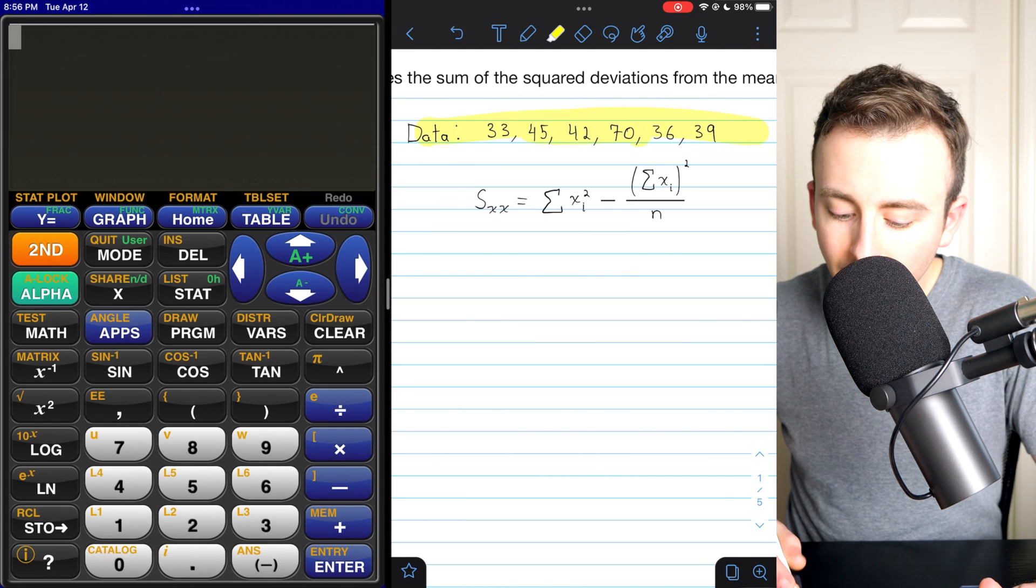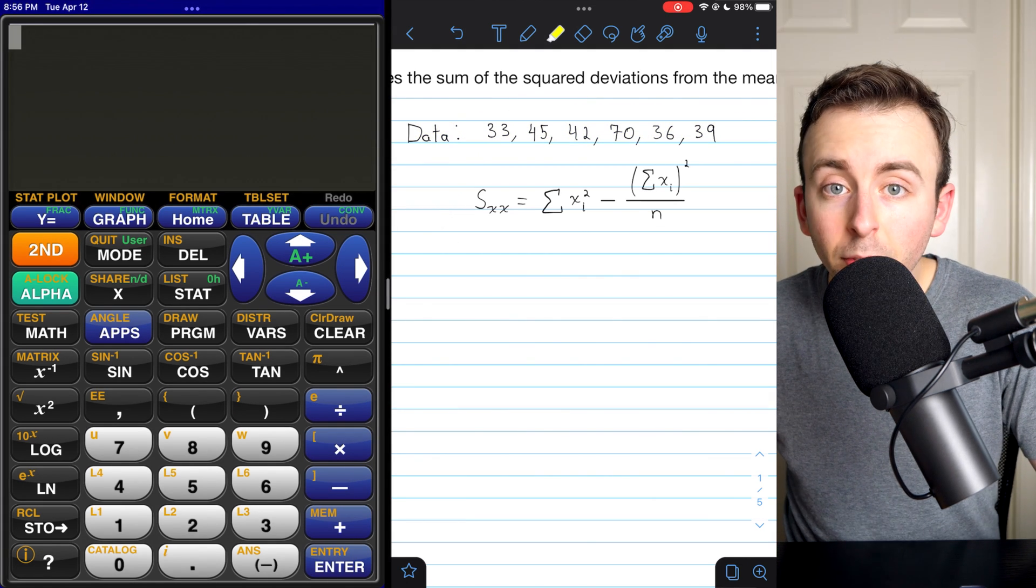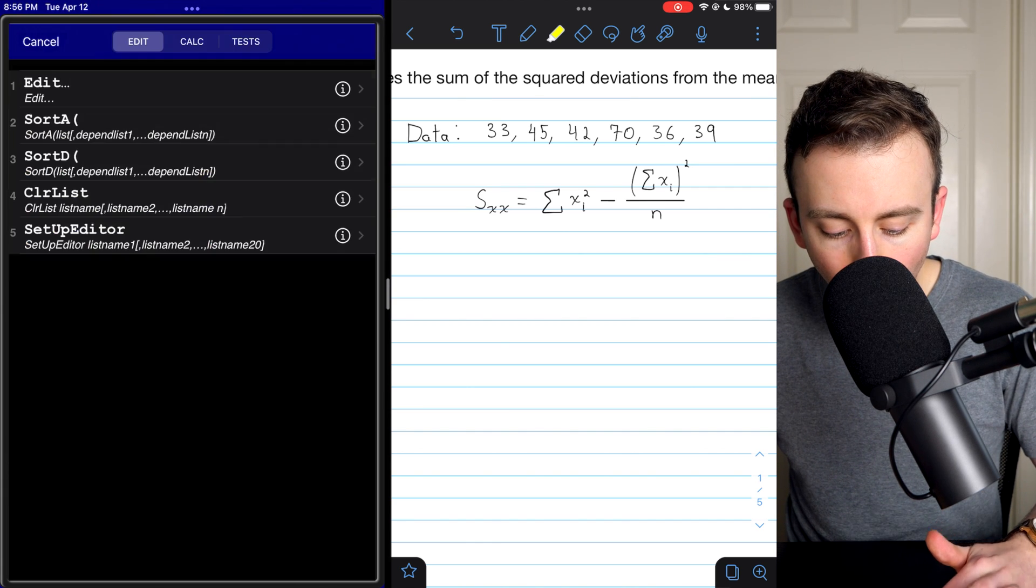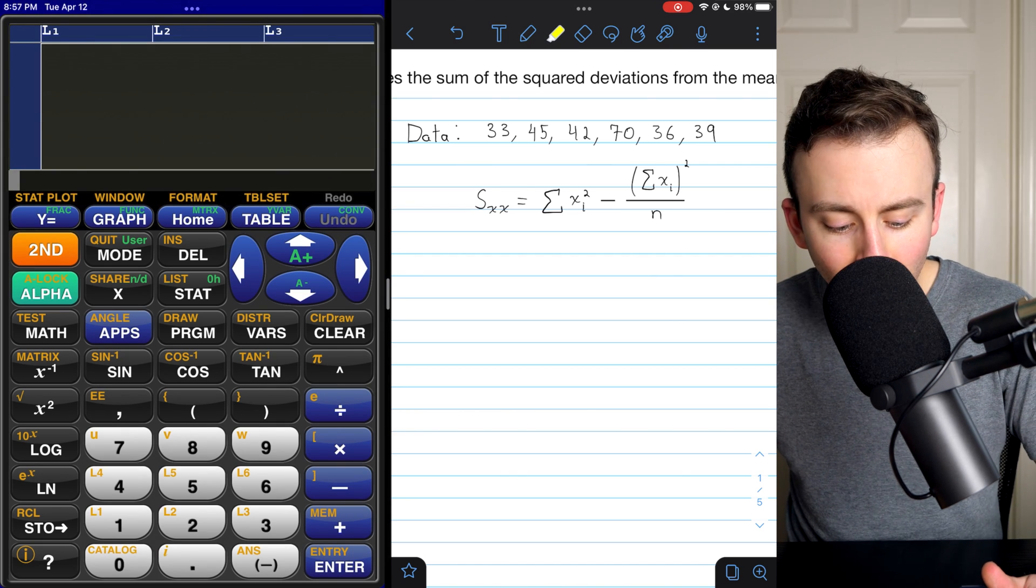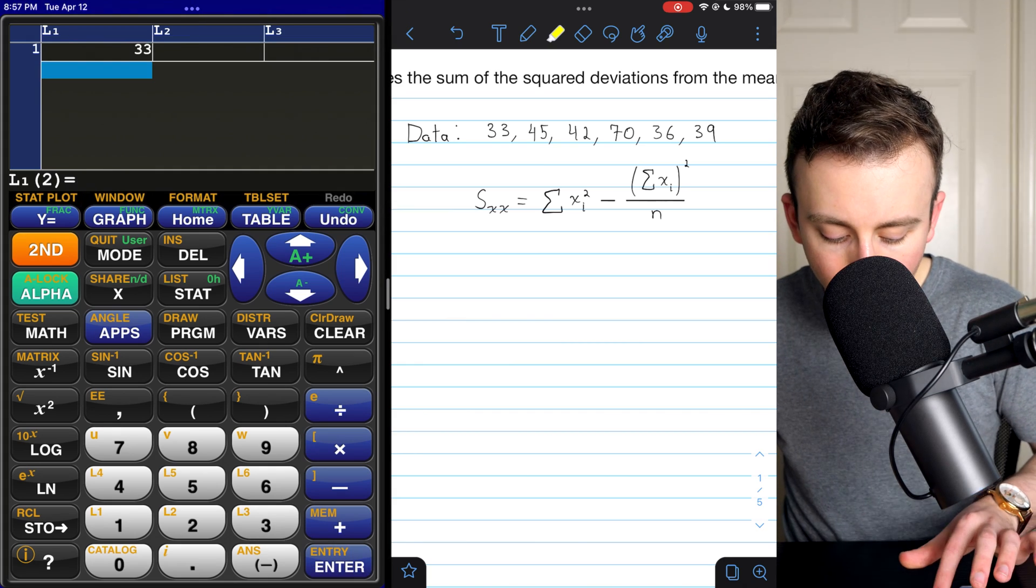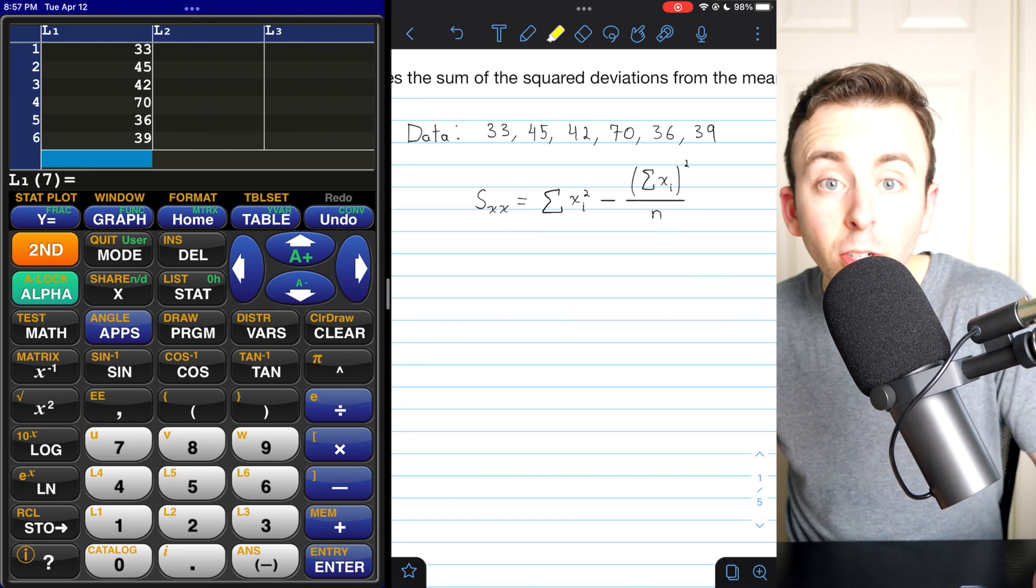Here is our data set. I've brought up the calculator. Let's go through the process. The first thing we have to do is enter the data into the calculator. To do that, I'll press stat, and then go to edit, and now I can enter data in my lists. I'll just go to list one, and then enter the data: 33, 45, 42, 70, 36, and 39. That is our data set. Just make sure I didn't enter anything wrong. Looks good.